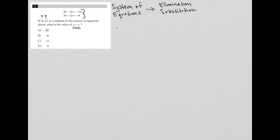I'm going to use elimination to do that. So I'm going to just rewrite the equations here. So 2X minus 3Y equals negative 14 and 3X minus 2Y equals negative 6.